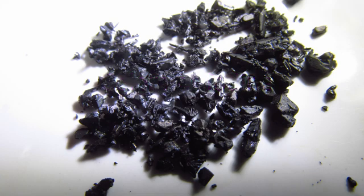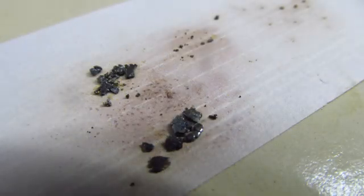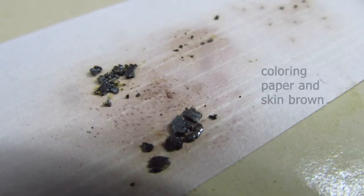Iodine is a gray-black solid, a little bit shiny, with a purple vapor which it can form above. Also, if you handle it, it can brown your skin or brown the paper, as you can see on this photo.